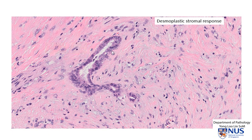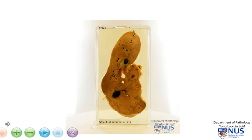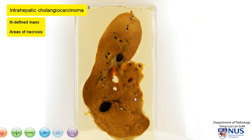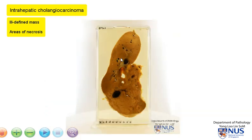Most cholangiocarcinomas are adenocarcinomas because the bile ducts are lined by glandular cells. However, in a minority of cases, we can also have adenosquamous carcinoma or even, very rarely, squamous cell carcinoma. To summarise, this is a case of intrahepatic cholangiocarcinoma, seen as a very ill-defined tumour mass with areas of necrosis, and some of the background bile ducts within the liver show evidence of biliary sludge.